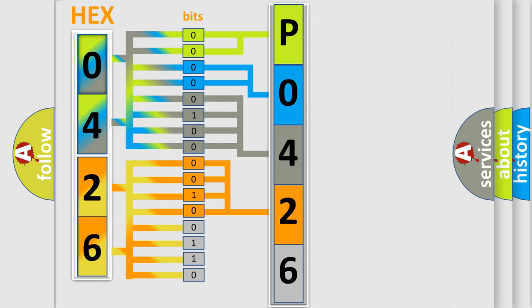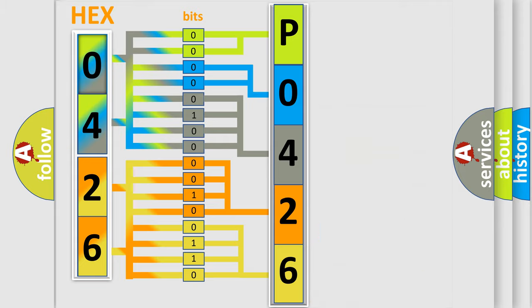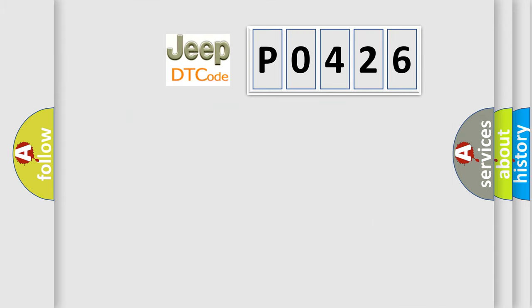A single byte conceals 256 possible combinations. We now know in what way the diagnostic tool translates the received information into a more comprehensible format. The number itself does not make sense to us if we cannot assign information about what it actually expresses. So, what does the diagnostic trouble code P0426 interpret specifically for Jeep and other car manufacturers?